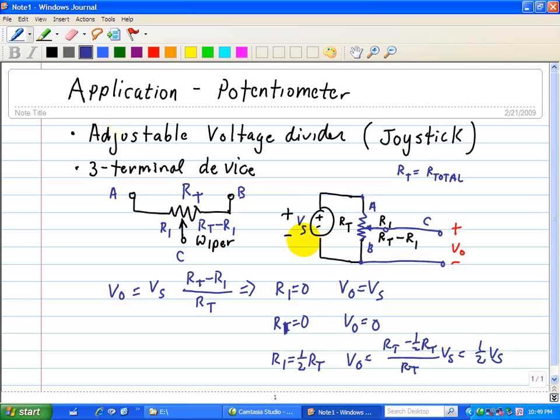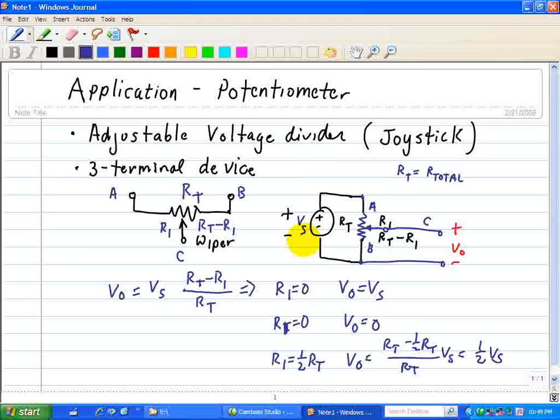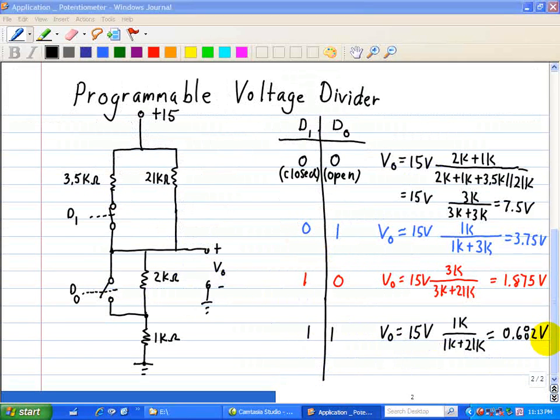It's just basically two resistors in parallel that you can adjust. Here we have an example of a programmable voltage divider.